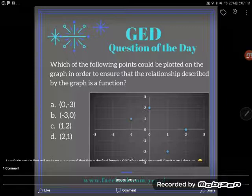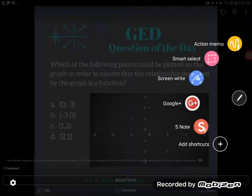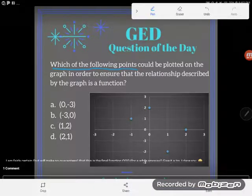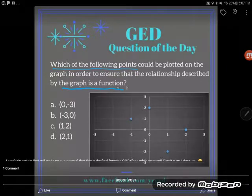So let's take a look at this problem here. It says which of the following points, and we see some points over here in our multiple choice answers, which of the following points could be plotted on our graph in order to ensure that the relationship described by the graph is a function?